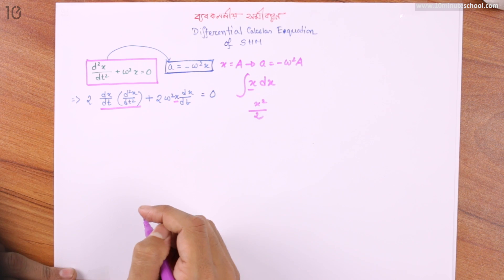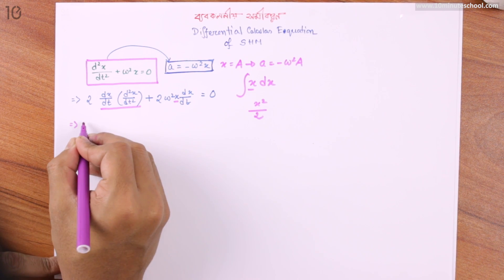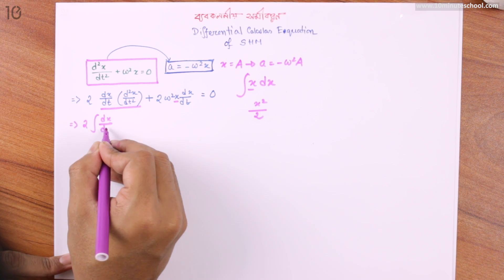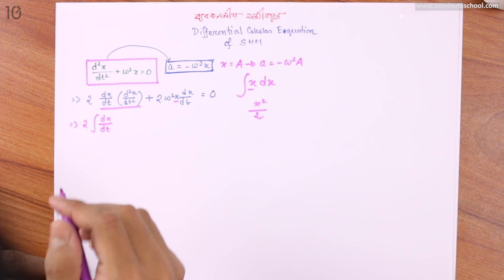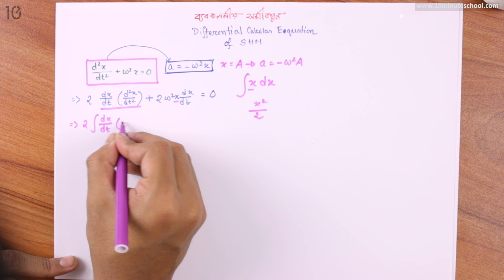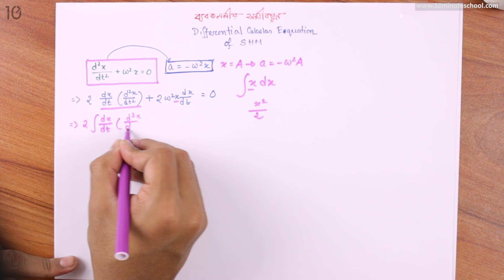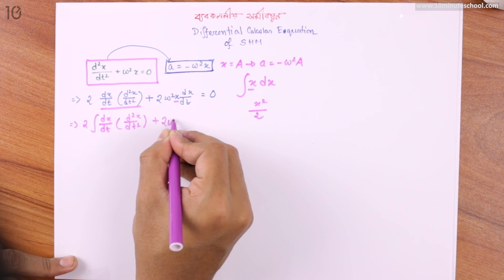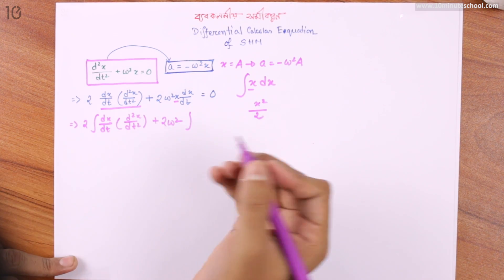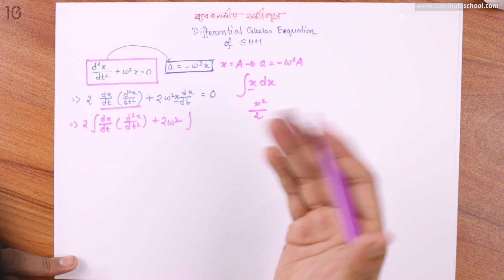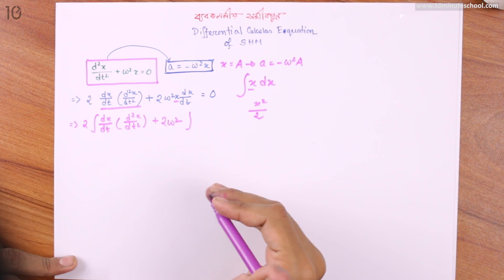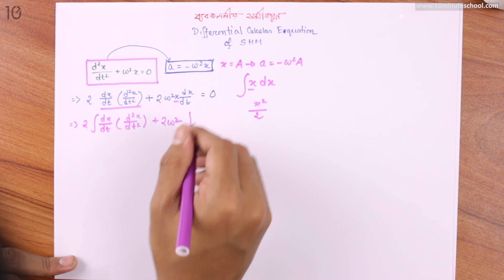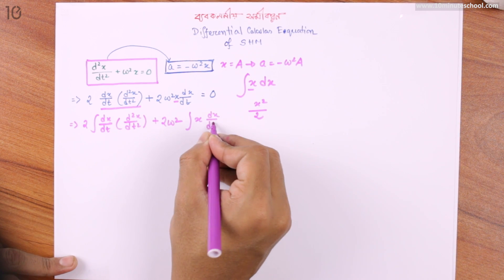Let's break the integration. I'll take the integration sign, dx by dt. So I will write d/dt of x, then write dt square plus 2 omega square by 4, because this is a t-e-r function.